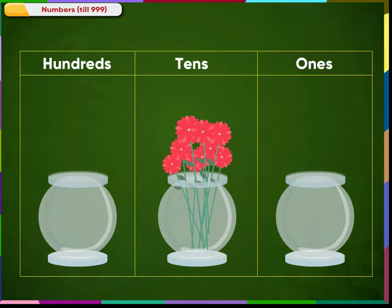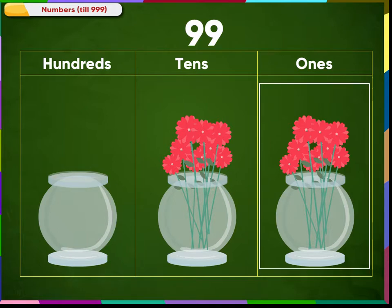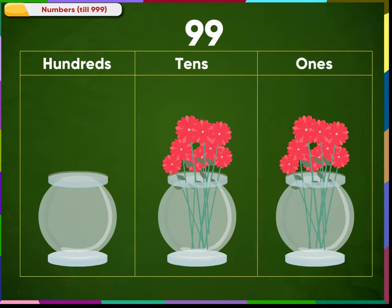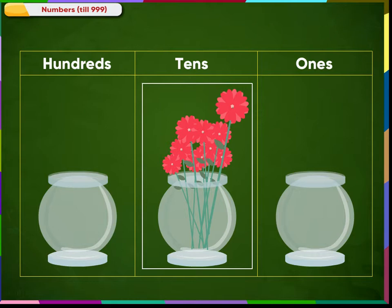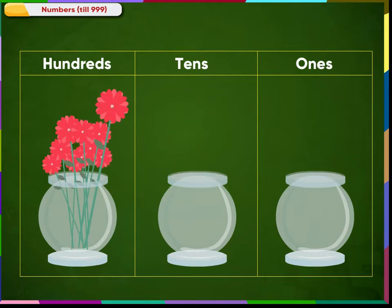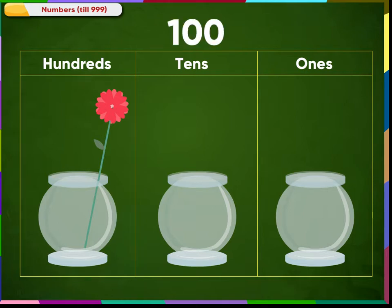This is the 1's place and this is the 10's place. Can you guess the number that comes after 99? This flower vase contains 9 flowers and this flower vase also contains 9 flowers. If we put one more flower in this vase, then there will be 10 flowers in all. This group of 10 flowers can be replaced by one flower in this vase. This vase contains 10 flowers, which can further be replaced by one flower in a new vase. This is a new place called the 100's place. Thus, we get 100 flowers.